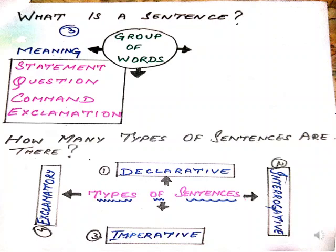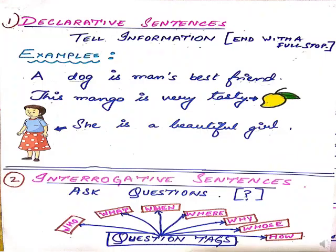Declarative is also known as an assertive sentence. Declarative sentences tell information — for example, 'this mango is very tasty.' You can see the picture also. One girl — it is describing her quality that she is very beautiful. So all such things come under declarative sentences.